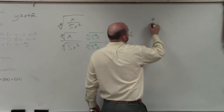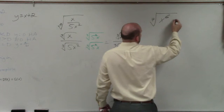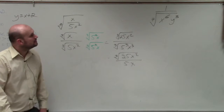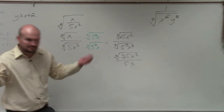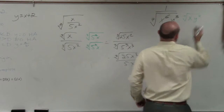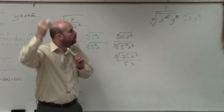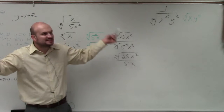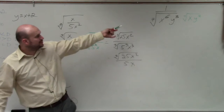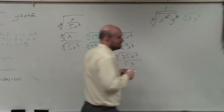Let's drive home the point. Seventh root of x to the sixth, y to the third, over 1 — what would I multiply by? You'd multiply by the seventh root of x times y to the fourth. Why? Because when you multiply those, what do you get? X to the seventh, y to the seventh. So you can take the seventh root of that. You're picking values that you can take the root of — whatever your index is, which is 7 in this case.